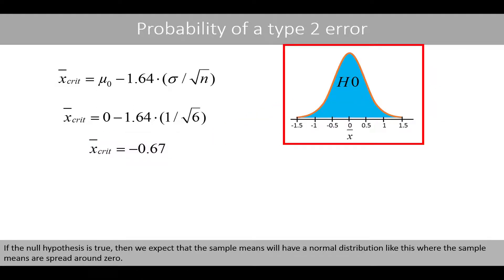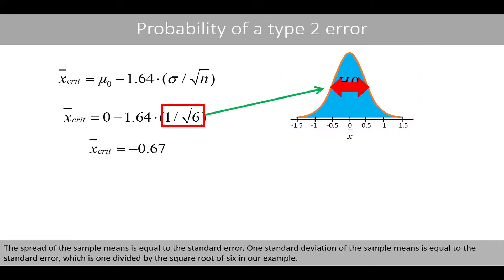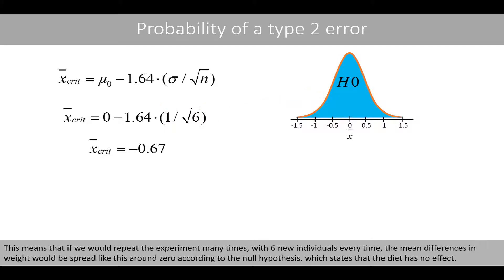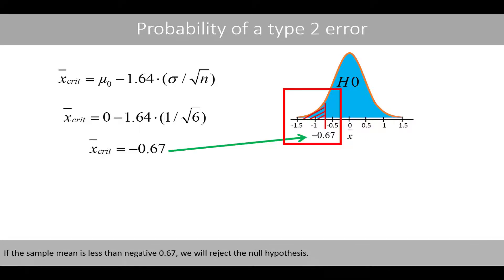If the null hypothesis is true, then we expect that the sample means will have a normal distribution like this, where the sample means are spread around 0. The spread of the sample means is equal to the standard error. One standard deviation of the sample means is equal to the standard error, which is 1 divided by the square root of 6 in our example. This means that if we would repeat the experiment many times with 6 new individuals every time, the mean differences in weight would be spread like this around 0 according to the null hypothesis, which states that the diet has no effect. If the sample mean is less than negative 0.67, we will reject the null hypothesis.